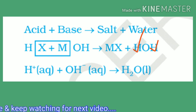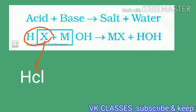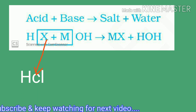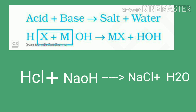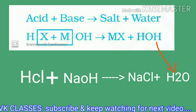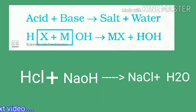Let's take a specific example: HCl as the acid and NaOH as the base. HCl reacts with NaOH to form the salt NaCl. The H⁺ ion from the acid and the OH⁻ ion from the base react to form H₂O. This confirms that H⁺ plus OH⁻ forms water.